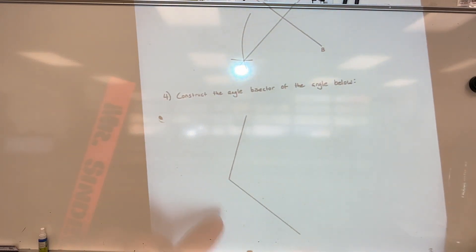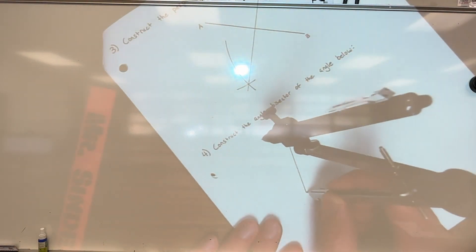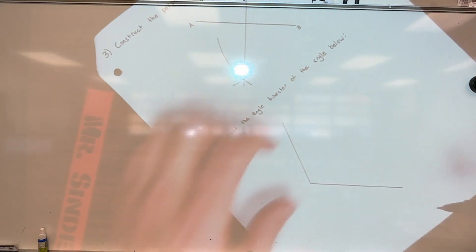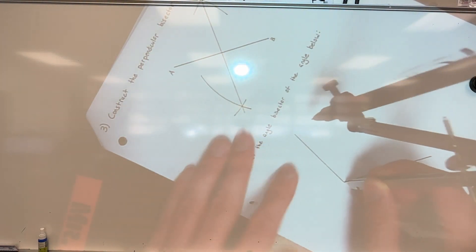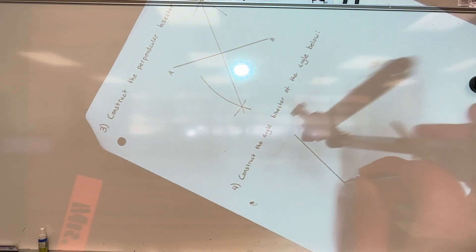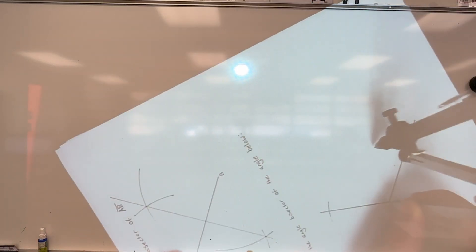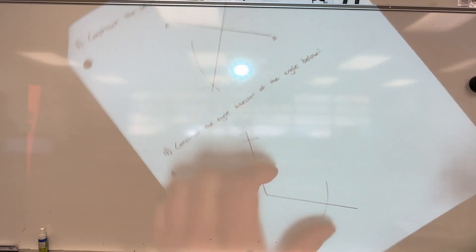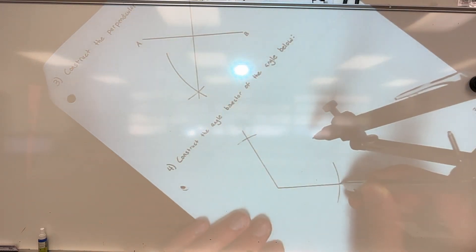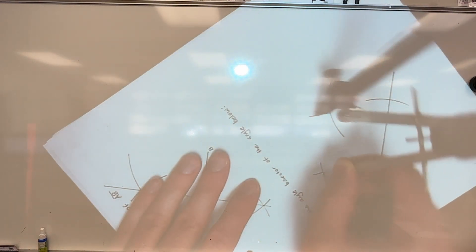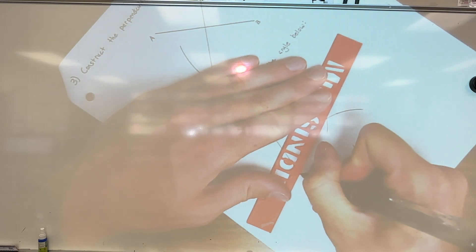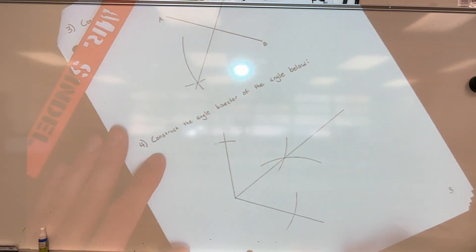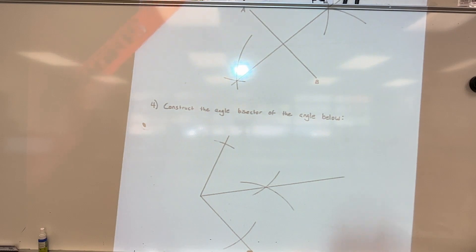Number four: angle bisector. It doesn't matter what length you choose, but this length and that length need to be the same. Cut both rays to the same length, then from those two intersections — using a new compass setting — mark an arc out in empty space. The intersection of those arcs gives you the ray that bisects the angle.